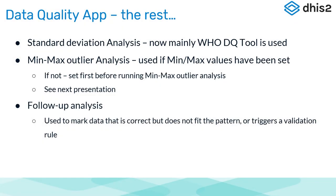The other services available in the Data Quality App: the standard deviation analysis — we mainly use the WHO DQ tool for extreme outliers and missing data. The min-max outlier analysis can only be used if you have set min-max values first, and the next presentation will go through that process. The last aspect in the Data Quality App is the follow-up analysis — it's used to mark data that is correct but does not fit the pattern or triggers a validation rule.